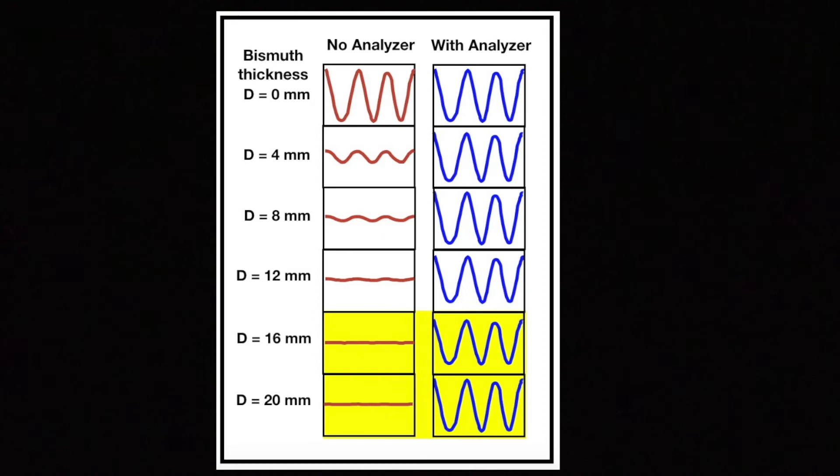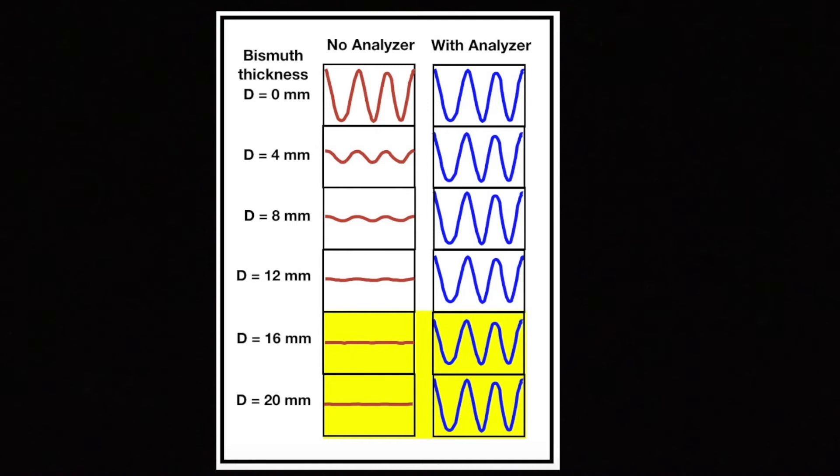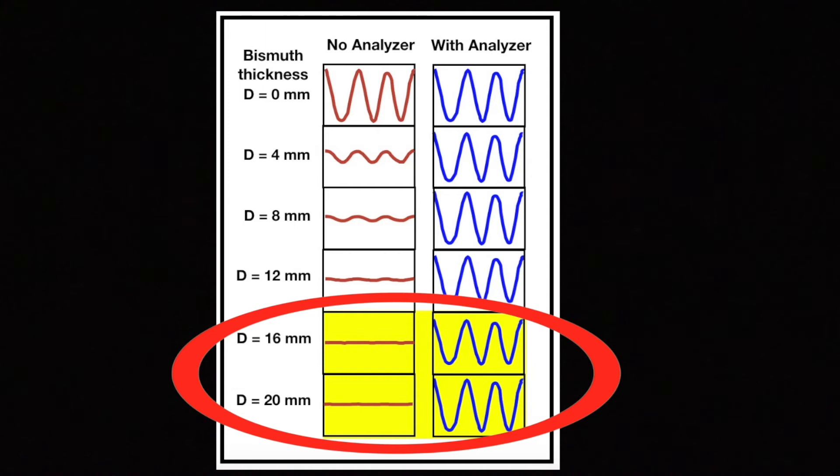The researchers discovered to their amazement that when the analyzer crystal was present in the experiment, robust interference was restored throughout the interferometer. Even with 20 millimeters of bismuth, there was a robust interference, high sine waves. That is shown on the right-hand side of this graph, and if you pay attention to the yellow area at the bottom, you can compare the effect of no analyzer crystal in the center column versus the presence of an analyzer crystal on the right.